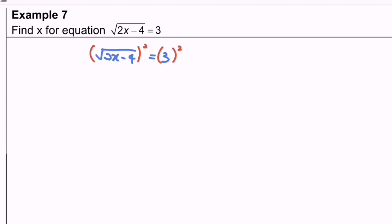Then, we need to simplify or expand. As we mentioned earlier as well, square root of something squared, we will have 2x minus 4 equals to 9.